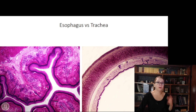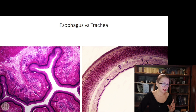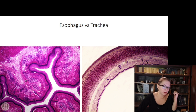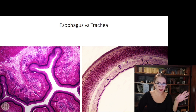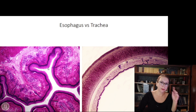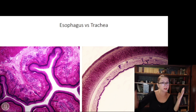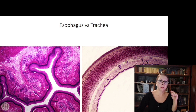Under the epithelium there is the lamina propria made of loose connective tissue where cardiac glands might be found in the esophagus, though they may not be present in all specimens. After that, the muscularis mucosae and the submucosa follow. In the submucosa, proper esophageal glands are present and well developed — almost always visible in student specimens. Remember: cardiac glands are located in the lamina propria, while proper esophageal glands are in the submucosa.